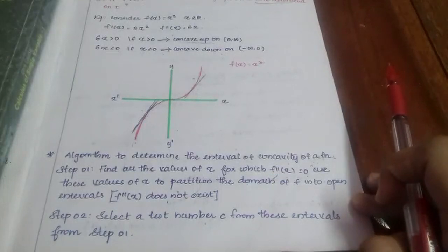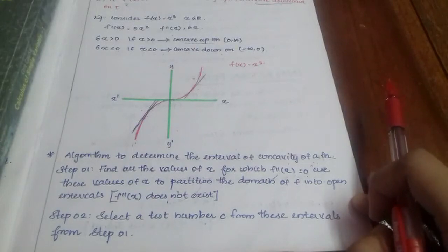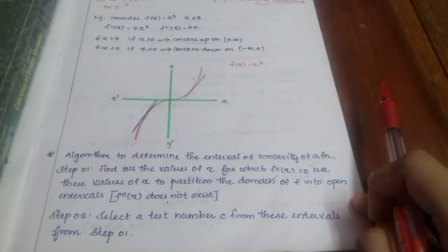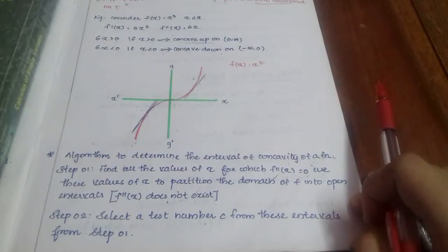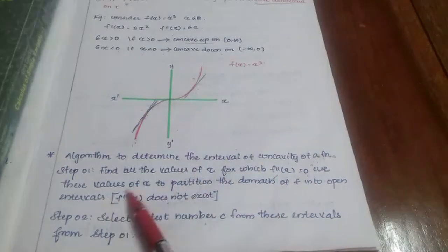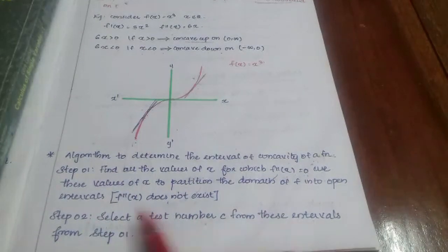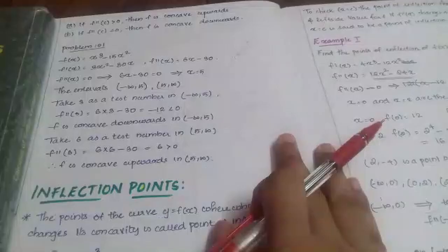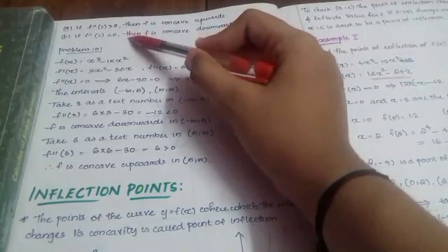Next, the algorithm to determine the interval of concavity of a function. Step 1: Find all the values of x for which f double dash of x equals 0. Use these values of x to partition the domain of f into open intervals. Step 2: Select a test number c from each interval from step 1. If f double dash of c is greater than 0, then f is concave upward. If f double dash of c is less than 0, then f is concave downward.